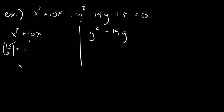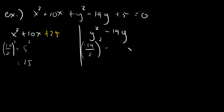You can create a PST by taking the middle term divided by 2 and squaring it. For x: 10 divided by 2 is 5, and 5 squared is 25. So I will add 25 to the x group. For y: negative 14 divided by 2 is negative 7, and negative 7 squared is 49. So I will add 49 to the y group to make it a perfect square trinomial.